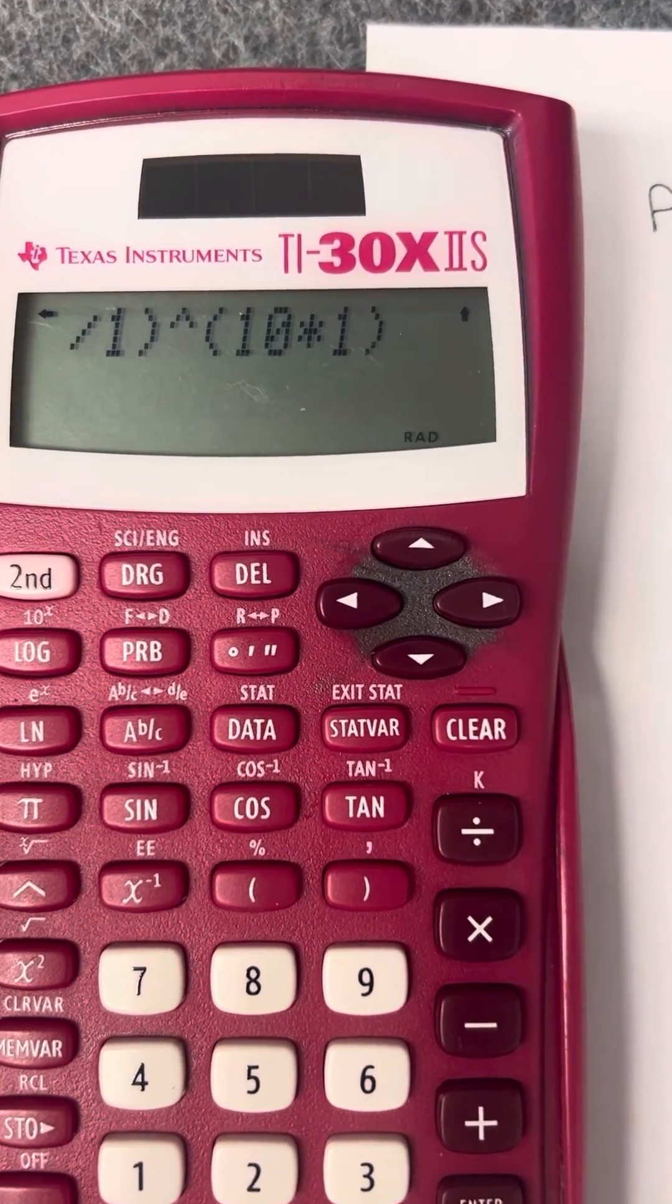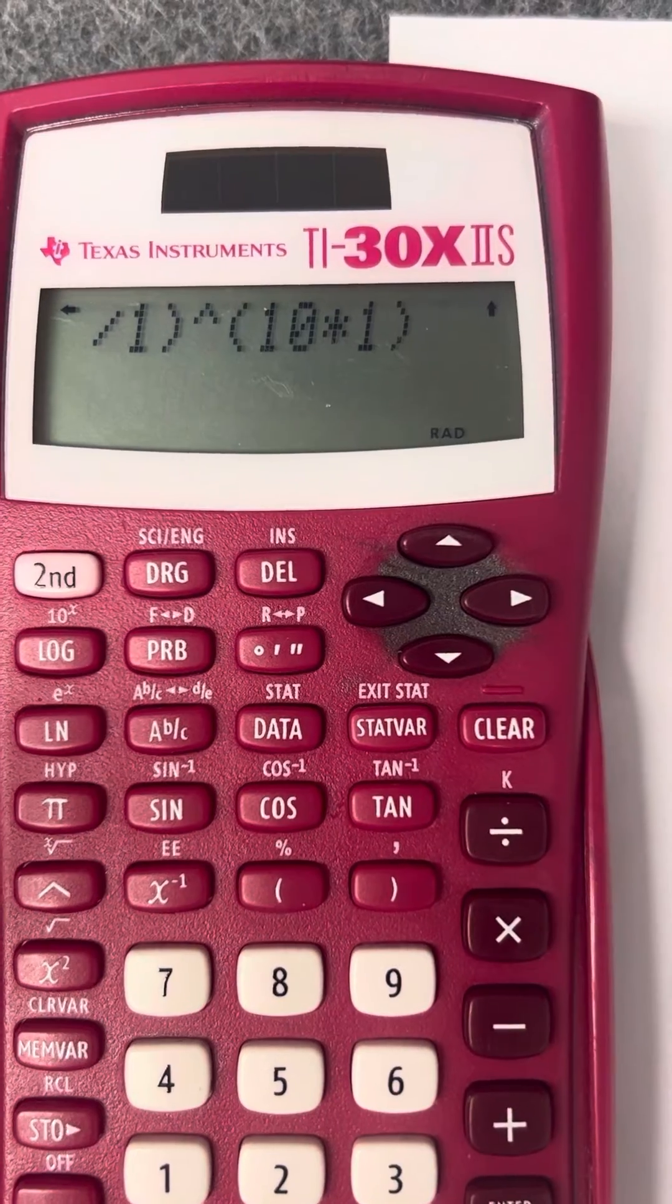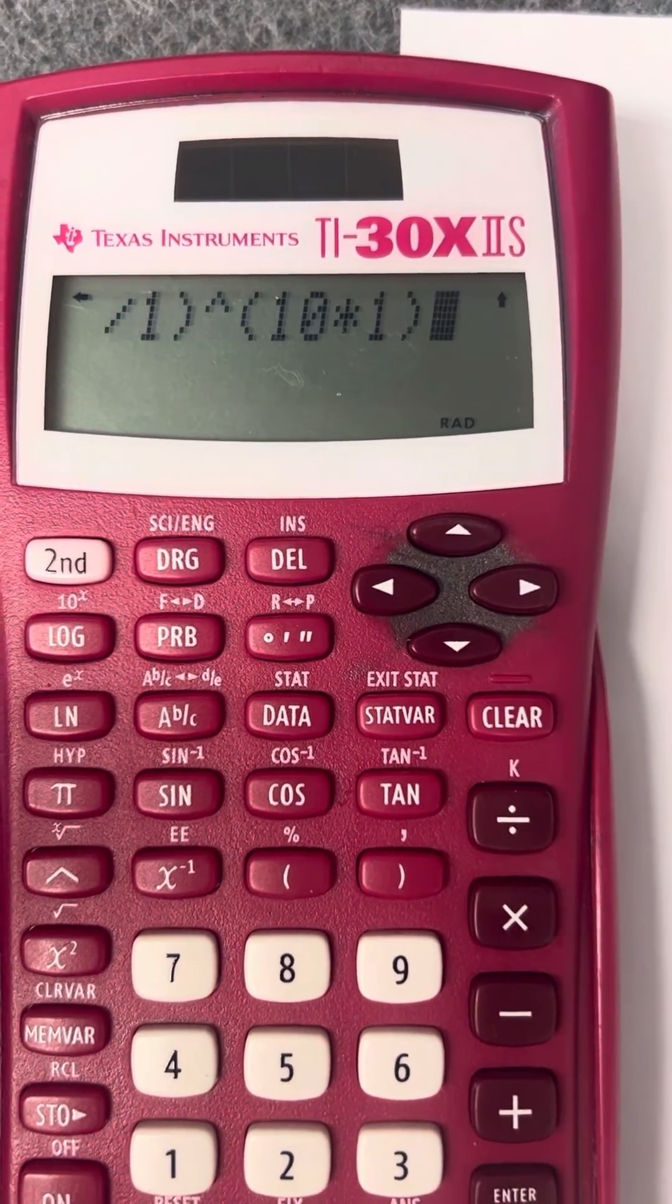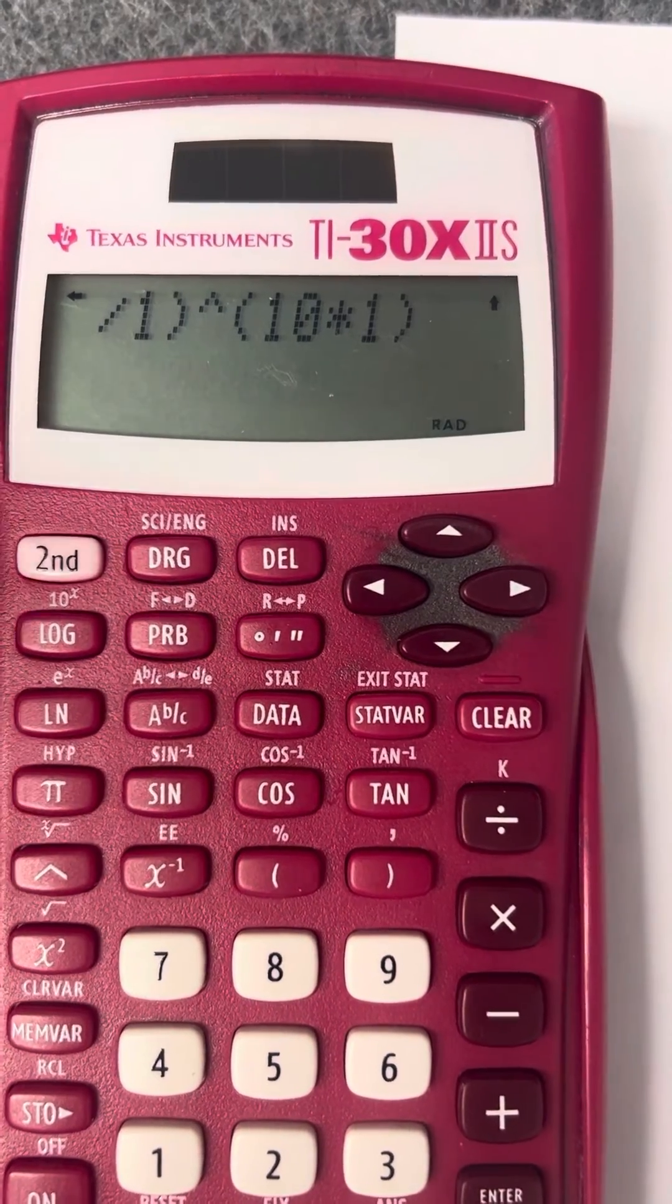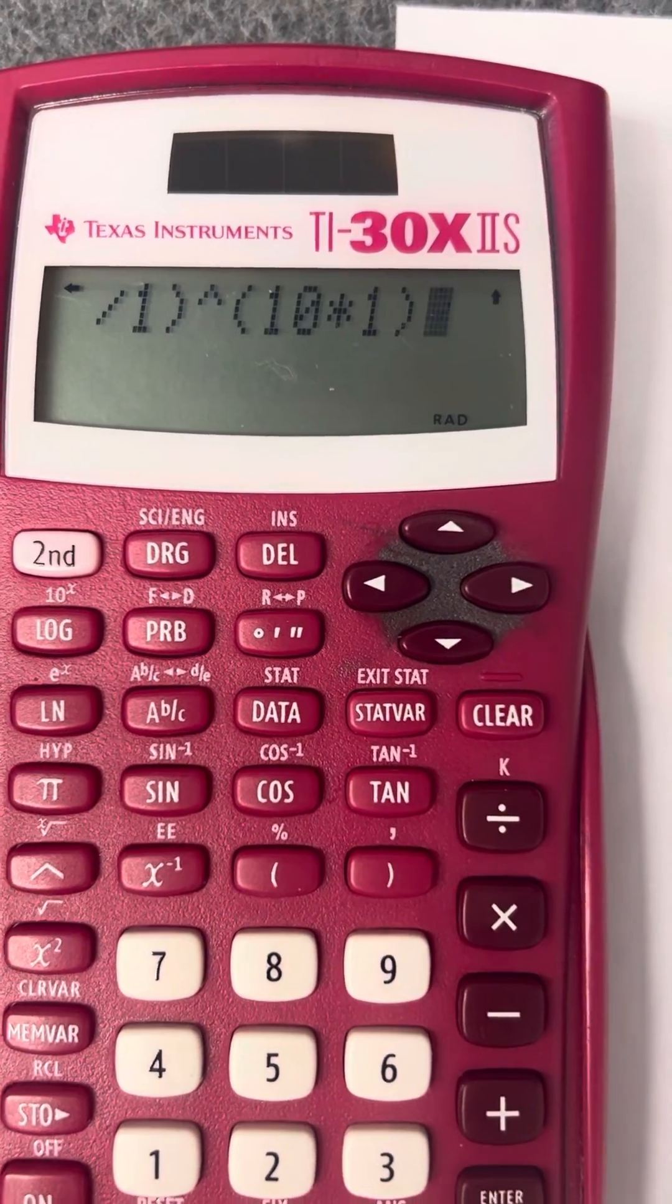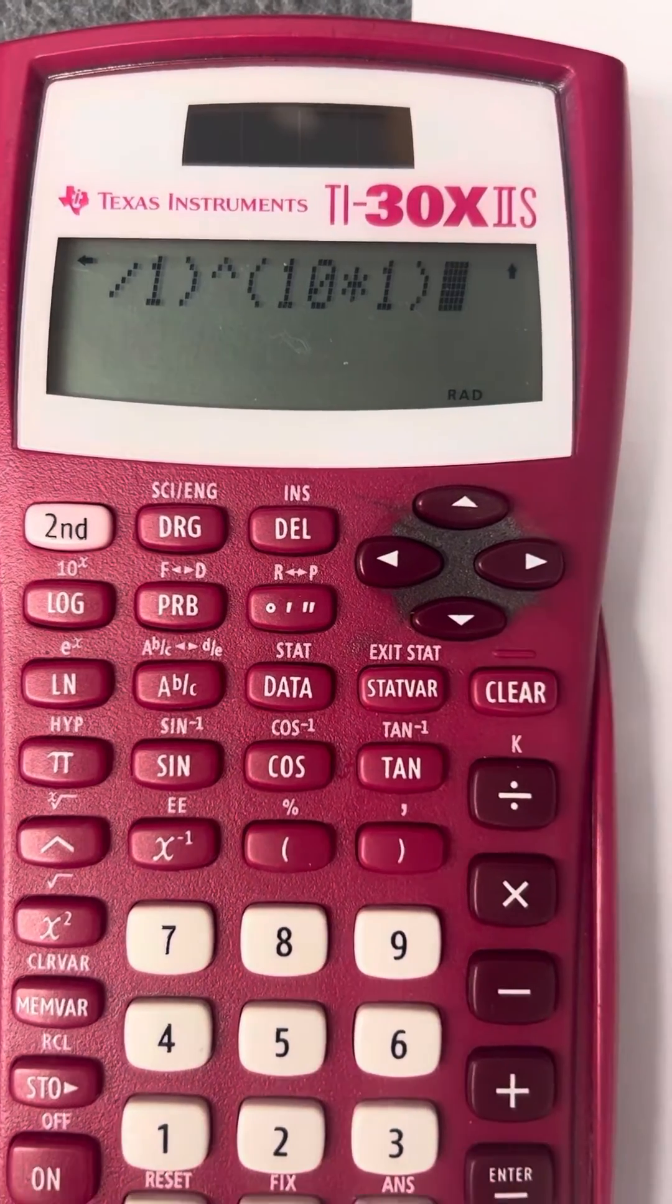If you want to use the calculator to multiply it out, put it in parentheses. Otherwise, it's going to raise it to the first number and then multiply the whole thing times whatever you put at the end if you don't put it in parentheses.